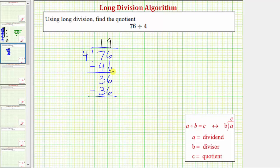36 minus 36 is zero, and because we have used all of the digits in the dividend, we're done. This zero represents a remainder of zero, and therefore our quotient is 19.